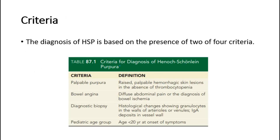The diagnosis of HSP is based on the presence of two of four criteria: palpable purpura; bowel angina; diagnostic biopsy with histological changes showing granulocytes in the walls of arterioles or venules, and IgA deposits in vessel wall; and age less than 20 years old at onset of symptoms.